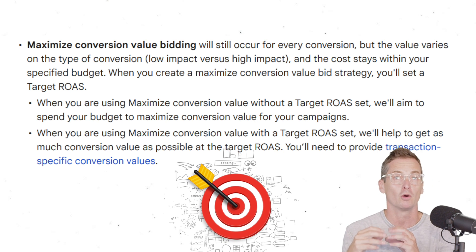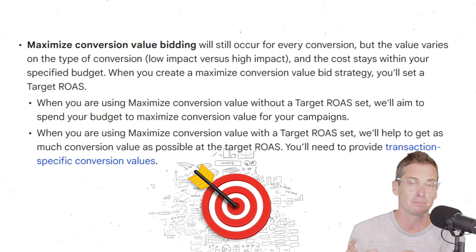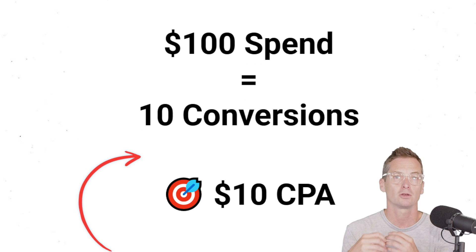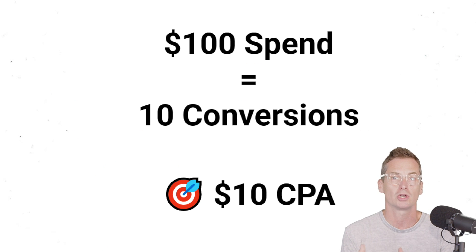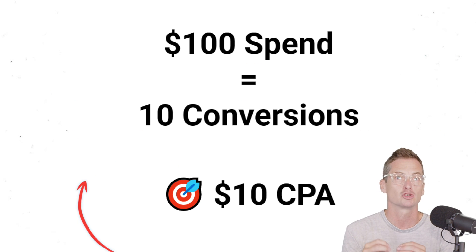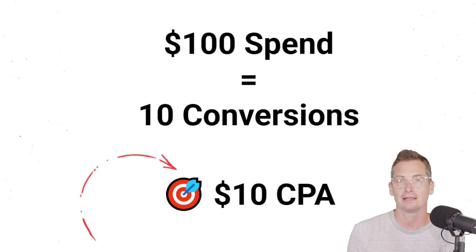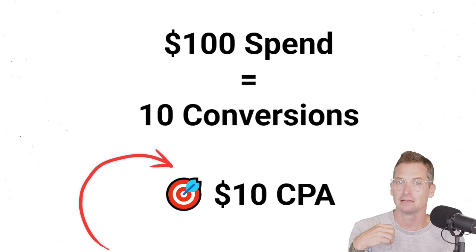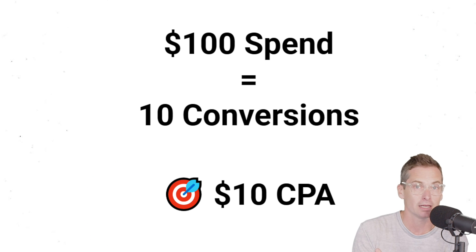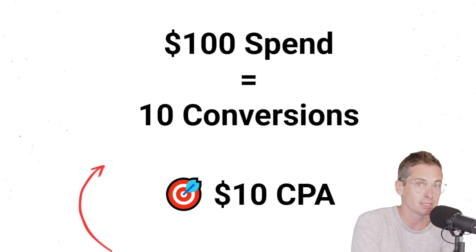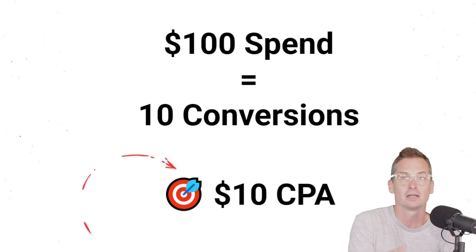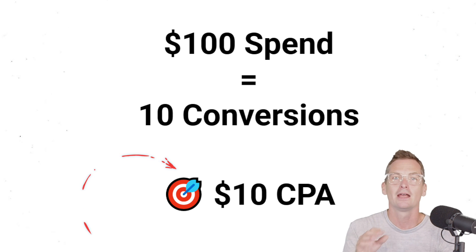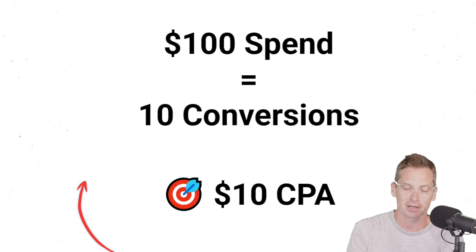We want to input what we'd like to pay for a conversion, and then Google Ads will go out and try to hit that number. It doesn't mean that it always will hit — sometimes it does hit that mark, sometimes it doesn't, and you pay regardless.